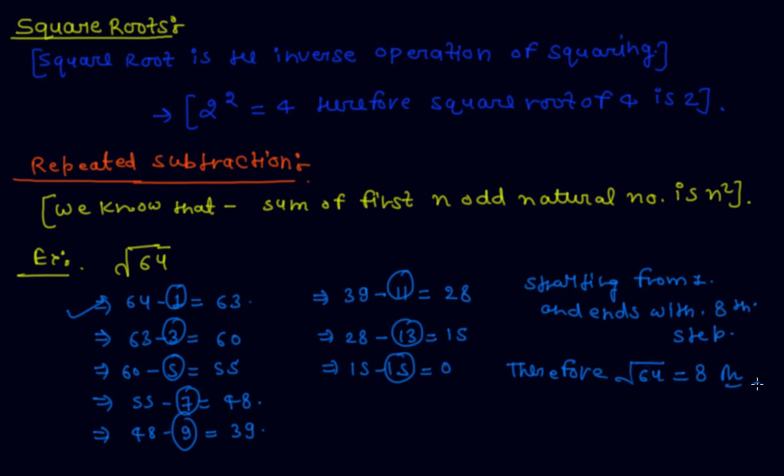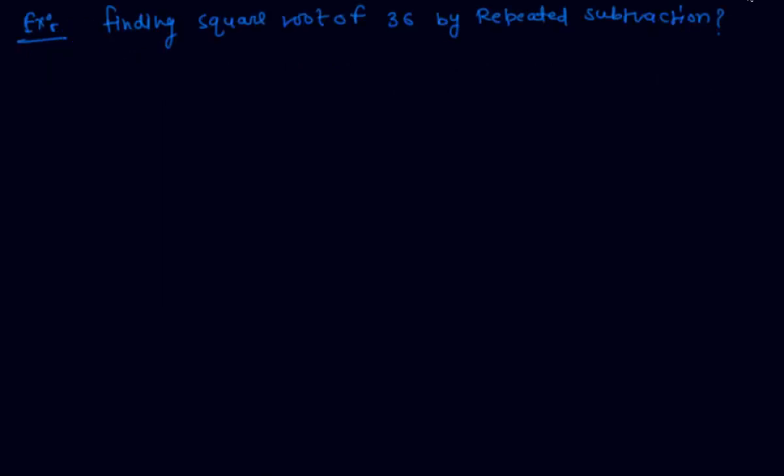So this is the repeated subtraction process to find a square root of any number. Now let's take one more example of this problem. Finding square root of 36 by repeated subtraction.